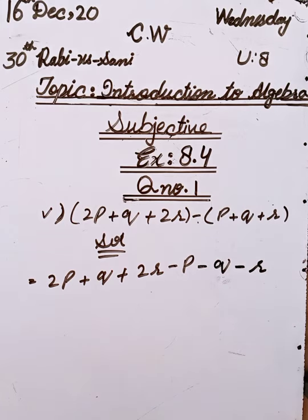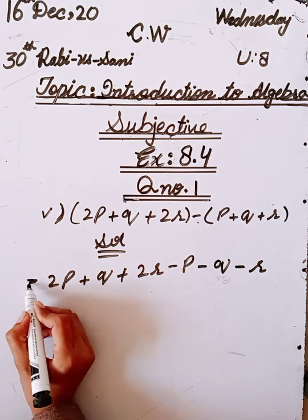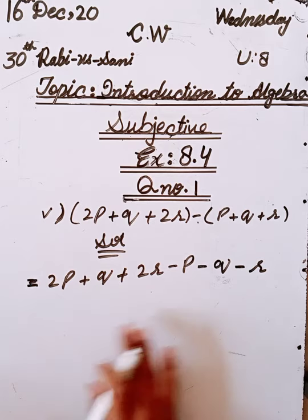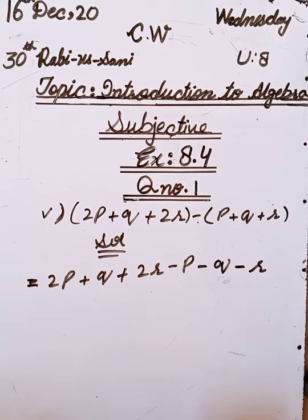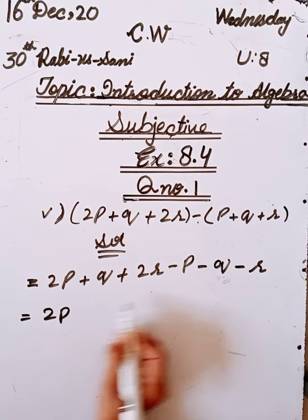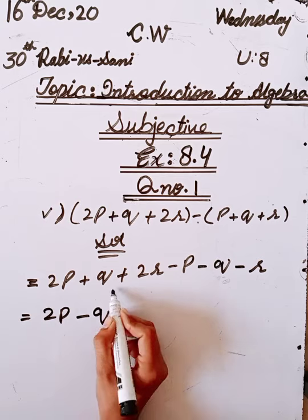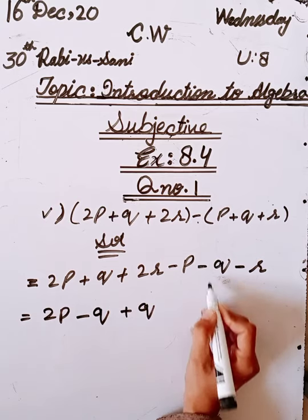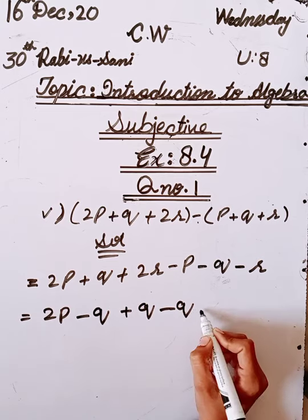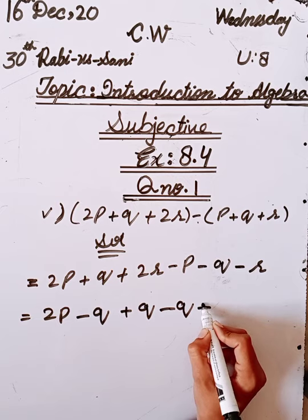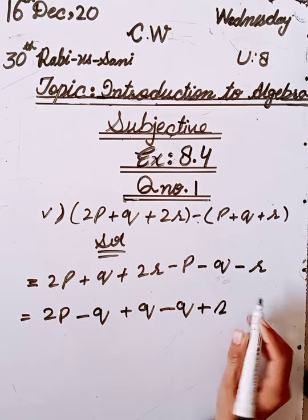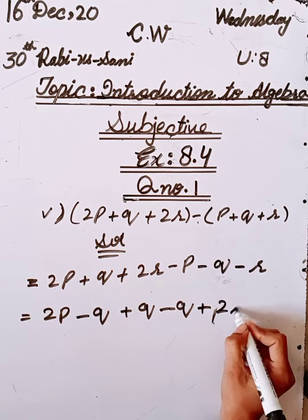Last time I reminded you: plus times plus equals plus, minus times minus equals plus, plus times minus equals minus, minus times plus equals minus. Now we have to combine the like terms together, like 2p with minus p, plus q with minus q, and plus 2r with minus r.